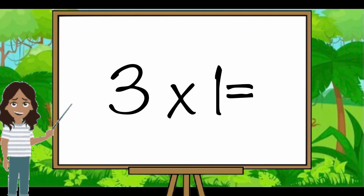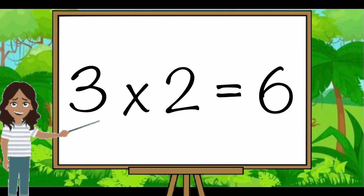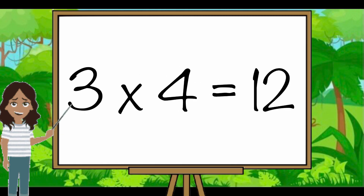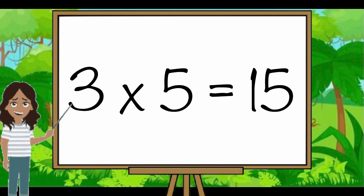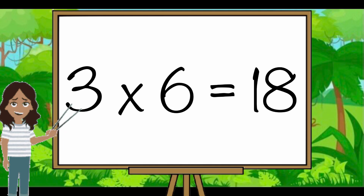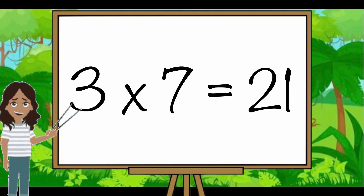Three ones are three. Three twos are six. Three threes are nine. Three fours are twelve. Three fives are fifteen. Three sixes are eighteen. Three sevens are twenty-one.